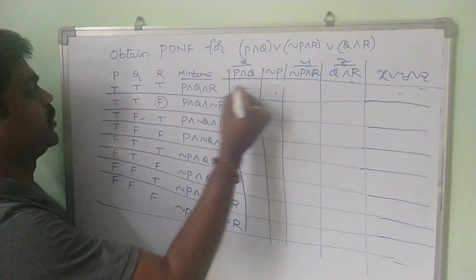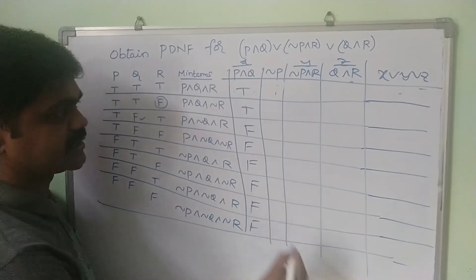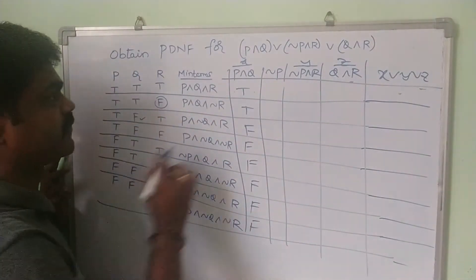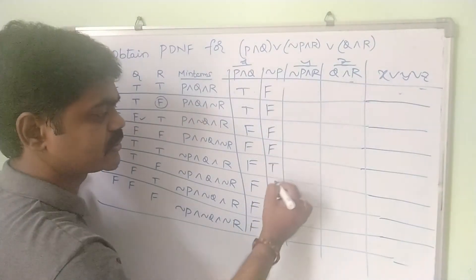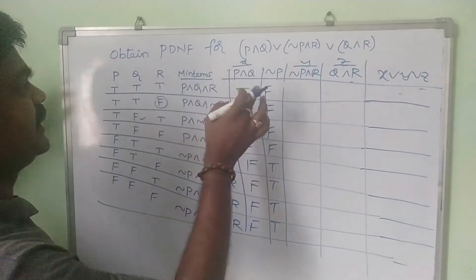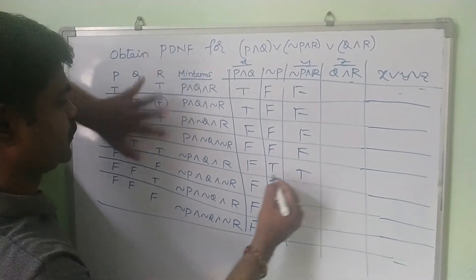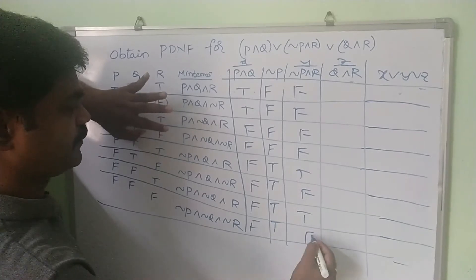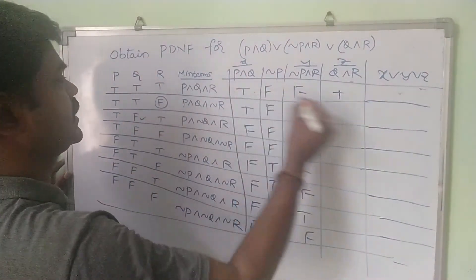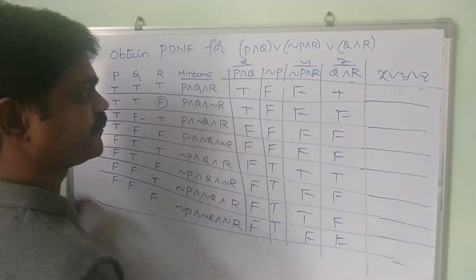For ¬P∧R: combining ¬P and R gives true for rows 5 and 7. For Q∧R: true when both Q and R are true, giving true for rows 1 and 5. These are the computed columns for X (P∧Q), Y (¬P∧R), and Z (Q∧R).